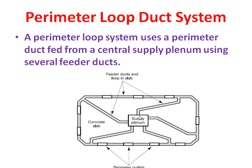This is the image of a perimeter loop duct system. There is one central supply plenum. The function of the supply plenum is to receive heated or cooled air from the AHU and supply it to the perimeter outlets. The air is supplied from the supply plenum to the perimeter ducts through feeder ducts — there are five perimeter feeder ducts.